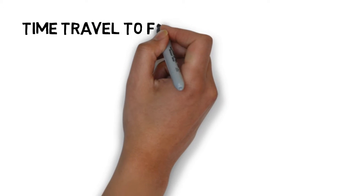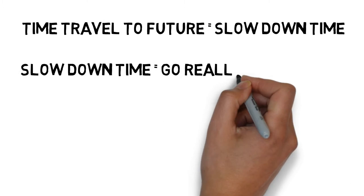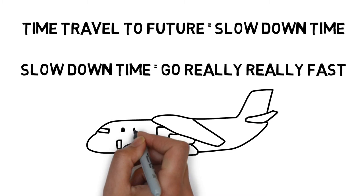To do it, you slow down your time in comparison to someone else or something else. A way to slow down your time is to go very, very fast.